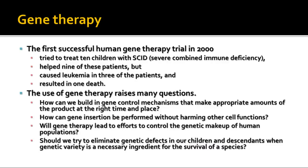The first successful gene therapy trial was in the year 2000, treating children with an immune disorder called SCID — severe combined immune deficiency. These are the children they used to call 'bubble children' because they had to remain isolated so they didn't pick up infections since their immune system didn't work. The first trial helped nine of the children, but it caused leukemia in three of them, and there was one death that resulted from the gene therapy. We need to look at control mechanisms and figure out how to insert genes into cells without harming other cell functions.